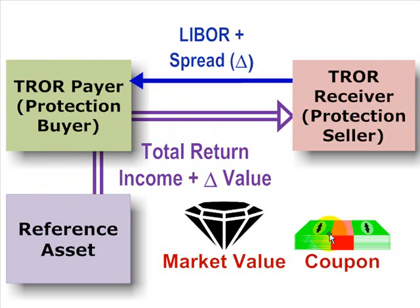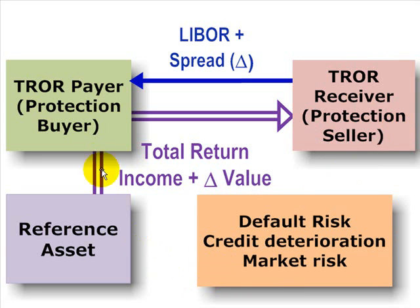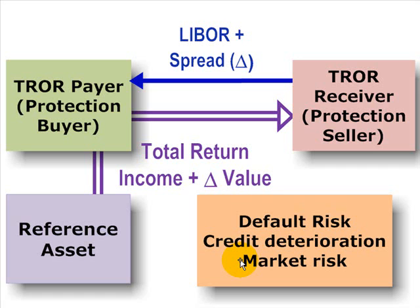In terms of the risks being transferred in this total rate of return swap, the payer is transferring default risk — which is the risk also transferred in the credit default swap — but the total rate of return swap is a more comprehensive risk transfer because the payer is also transferring credit deterioration and market risk. Credit deterioration could be a downgrade on this bond obligation. Market risk can be simply a change in the interest rate that causes depreciation in the market value of the bond. So all three of these risks are being transferred, and the total rate of return receiver is exposed to all three.